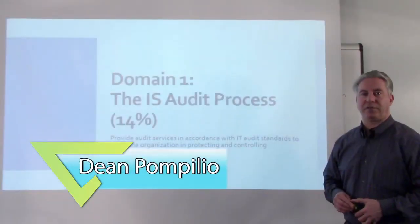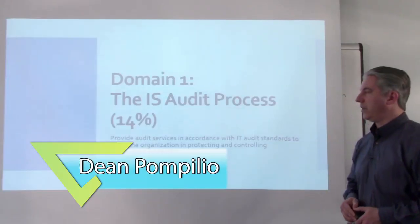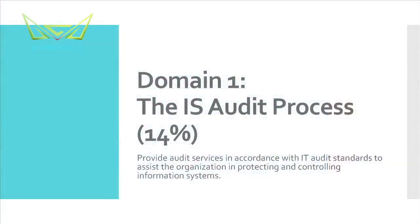Let's start talking about the first domain: the IS audit process. One interesting thing about the breakdown of the domains is that ISACA tells us roughly what percentage of this domain is covered in the exam — 14% for the first domain. This is the smallest; there are a few domains at 14%, but it's the smallest amount that a particular domain will take in the exam.